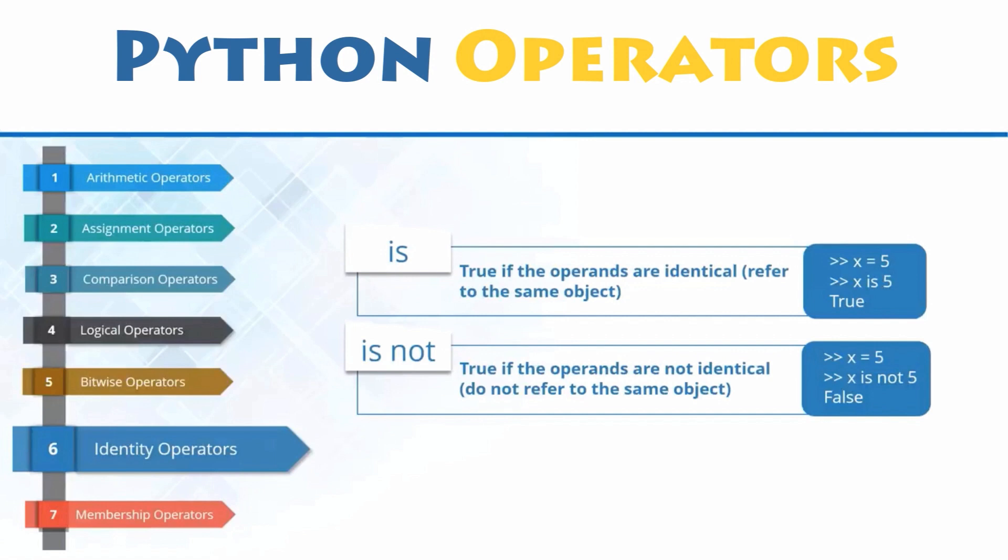Identity operators. Identity operators, is and is not, are used to compare two values or variables, not if they are equal, but if they are actually the same object, located on the same part of the memory.